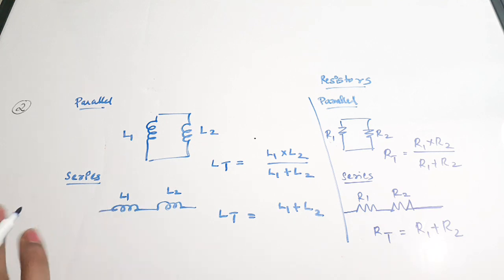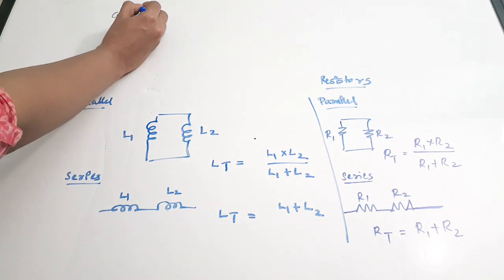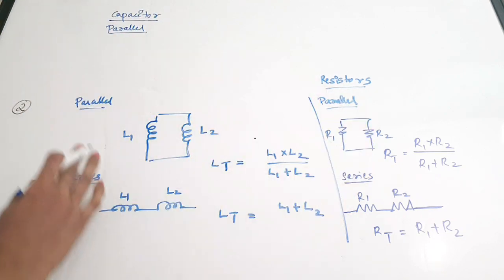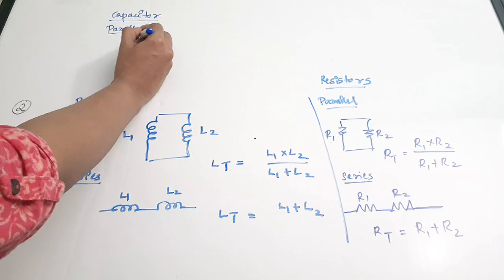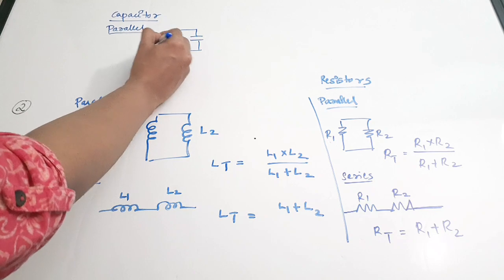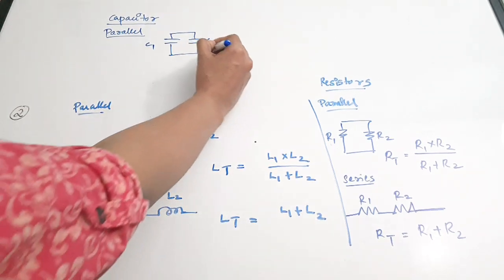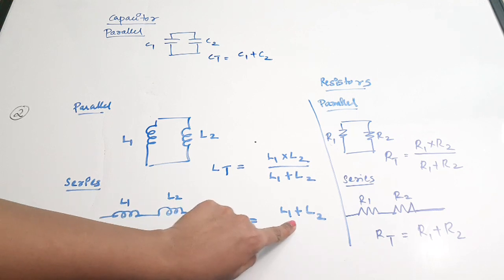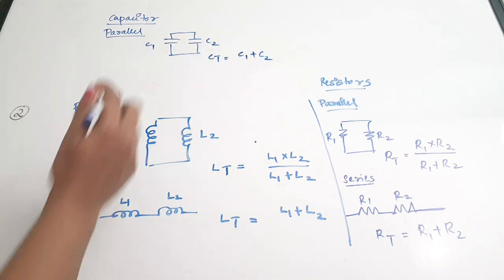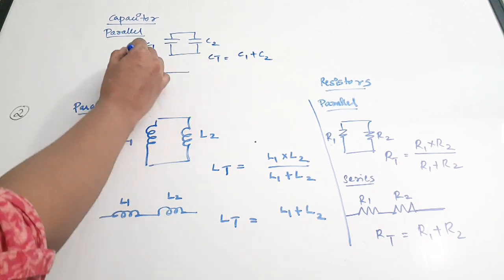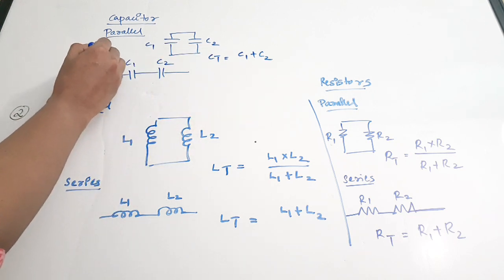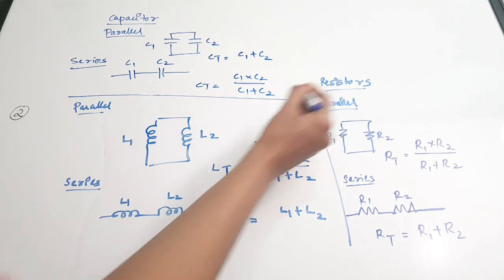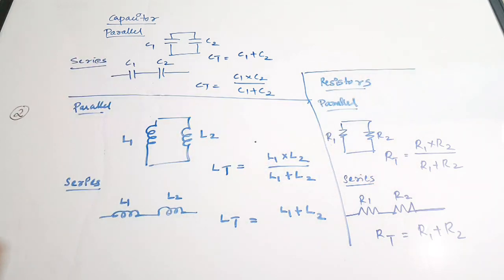For capacitors, the cases reverse. When capacitors C1 and C2 are connected in parallel, CT equals C1 plus C2 — the opposite of inductors and resistors. When the capacitors are in series, CT equals C1 times C2 divided by C1 plus C2. So resistors and inductors follow the same relation, whereas capacitors follow an inverse relation in series and parallel combinations.